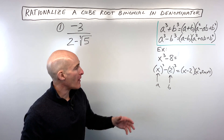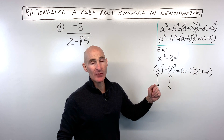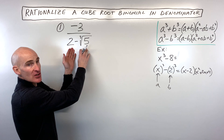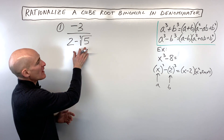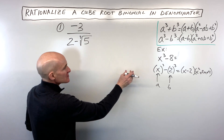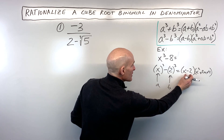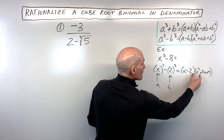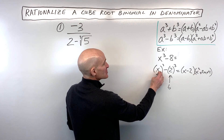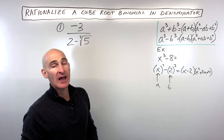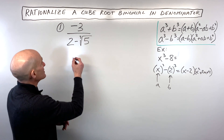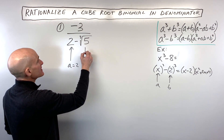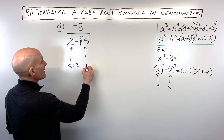Knowing what we know about factoring difference and sum of two cubes, we're going to look at this denominator: 2 minus the cube root of 5. This binomial represents one factor. We're going to multiply by a corresponding trinomial so that together they give us a difference of two cubes, and that's how we eliminate the cube root. So let's think of 2 as our a value.